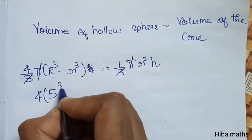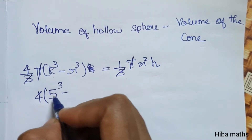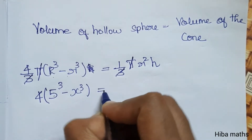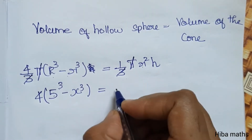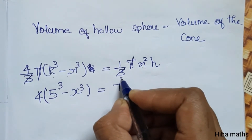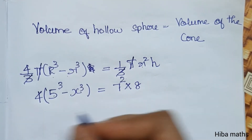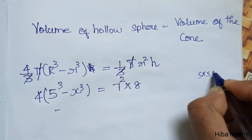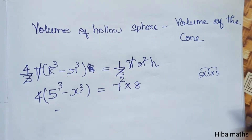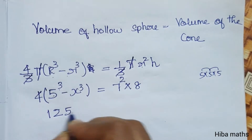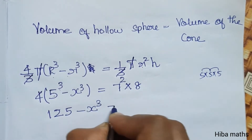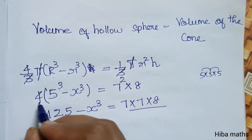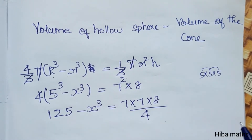Substituting the values: capital R is 5, so 5³ minus x³, and on the right side r is 7, so 7 squared into height 8, divided by 4. We get 5³ minus x³ equals 7 squared times 8 divided by 4.